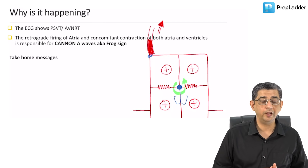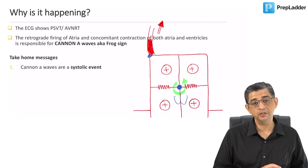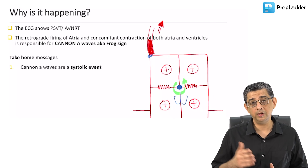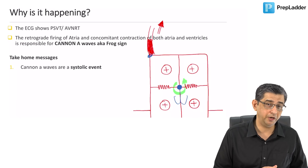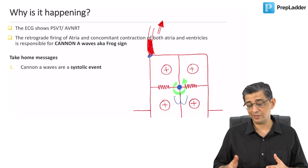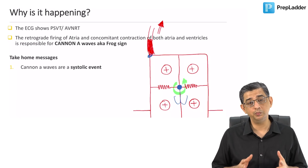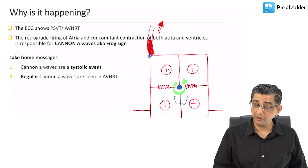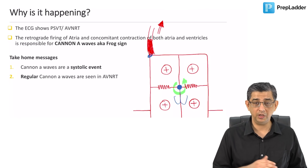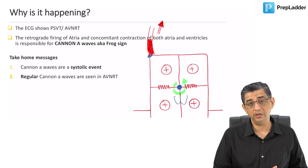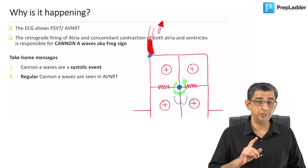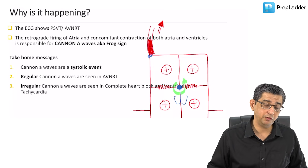Let's look at the take-home messages. First, cannon A-waves are systolic A-waves. You can notice the simultaneous activation of the atrium and ventricles, and the power of the two is added, resulting in this super large A-wave. They can be regular or irregular — regular is seen with supraventricular tachycardia, as discussed, whereas irregular cannon A-waves are seen with AV dissociation.